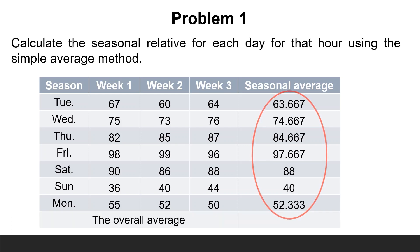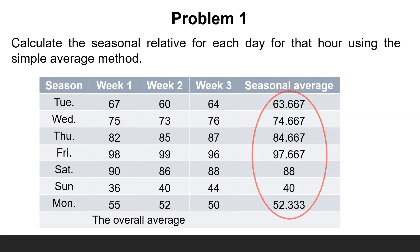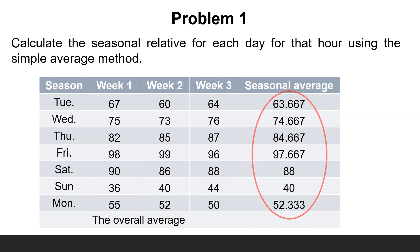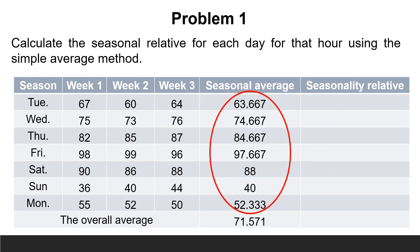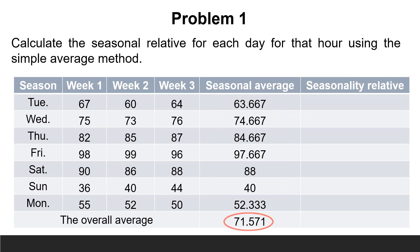The second step is to compute the overall average. That equals 63.667 plus 74.667 plus 84.667 plus 97.667 plus 98 plus 40 plus 52.333, divided by 7, equals 71.571. The last step is to calculate the seasonality relative for each day by dividing the average of each day by the overall average.